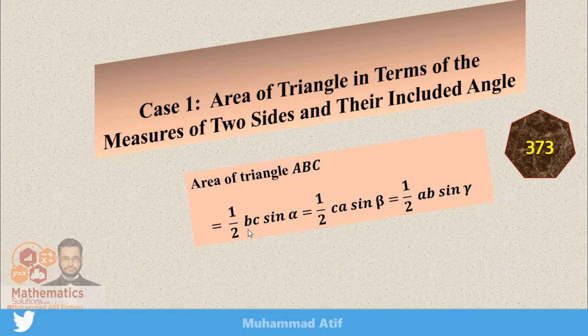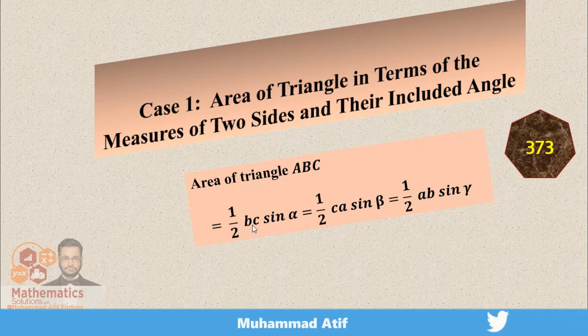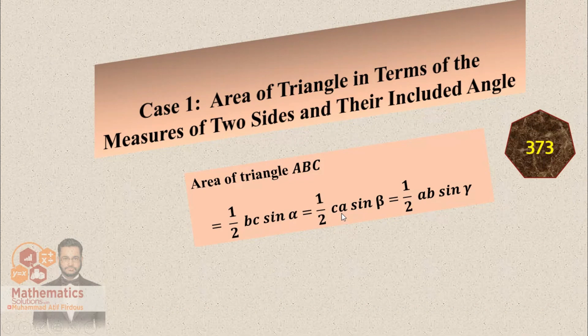You can see that there are two sides and the corresponding included angle. If you remember B, C and alpha — when you have B and C, the corresponding angle is alpha. If you remember C, A and the missing side, the corresponding angle is beta.